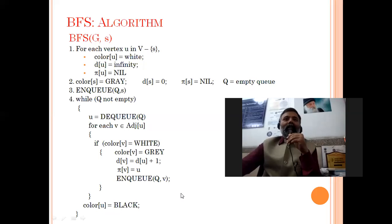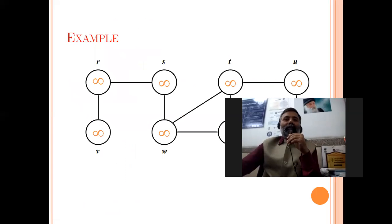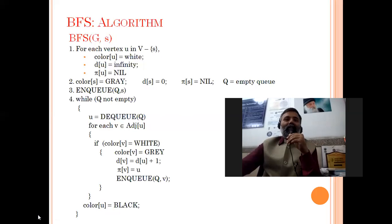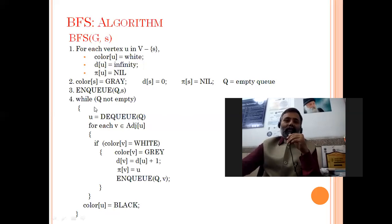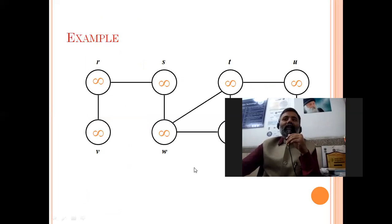After processing all adjacent nodes of u, the work for u is finished, so we set the color of u to black. When the queue becomes empty, it means all nodes have been covered and all nodes have been traversed. This is the complete BFS algorithm. Now we will take an example.